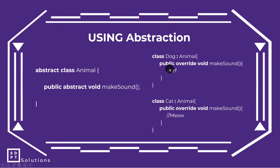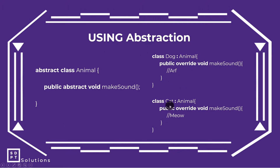Para ma-override natin tong abstract na method na to — by the way, pipilitin kayong i-override yun. Kapag hindi nyo i-override yun, mag-error. Sasabihin niya dapat i-override natin yung MakeSound. So meron tayo public override void MakeSound. Kung pinanood nyo yung last episode natin, ginamit na din natin tong override. Kailangan may override kasi ino-override niya yung isang method dun sa kanyang parent, which is etong MakeSound. Pagka wala override, mag-error din. So pwede nyo nang idagdag ang kahit anong gusto dito sa loob ng Dog at Cat.